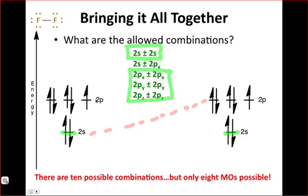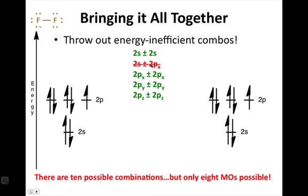We do still see combinations of orbitals that are different in energy. But in the case when we need to throw out an interaction, we can look for interactions between orbitals of different energy and instantly throw those out. And that's where we get the motivation to throw out the 2s plus or minus 2px combinations because they're energy inefficient.